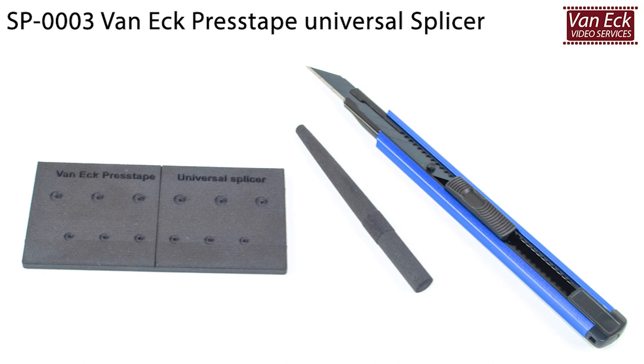The Van Ecke Universal Press Tape Splicer is for splicing Super 8, 8mm and 16mm film. It securely holds the film in position while you use a knife to cut the film and apply press tape to both sides of the film.